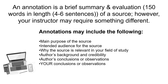An annotation is usually about 150 words in length, which is usually four to six sentences, but your instructor may require something different, so be sure to ask. Annotations may include the source's main purpose, its intended audience, why the source is relevant to your research, information about the author's background and credibility, as well as their observations and conclusions. It may also include your own conclusions or observations. Your annotation may not include all six pieces listed here, but it should cover some of them.